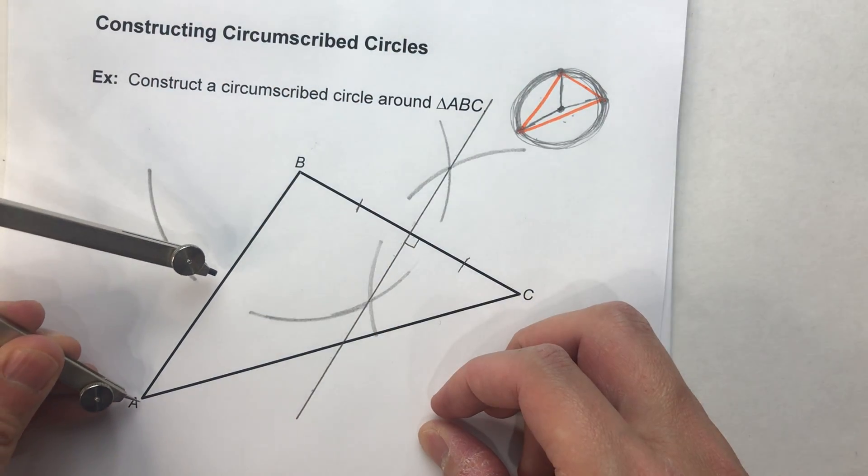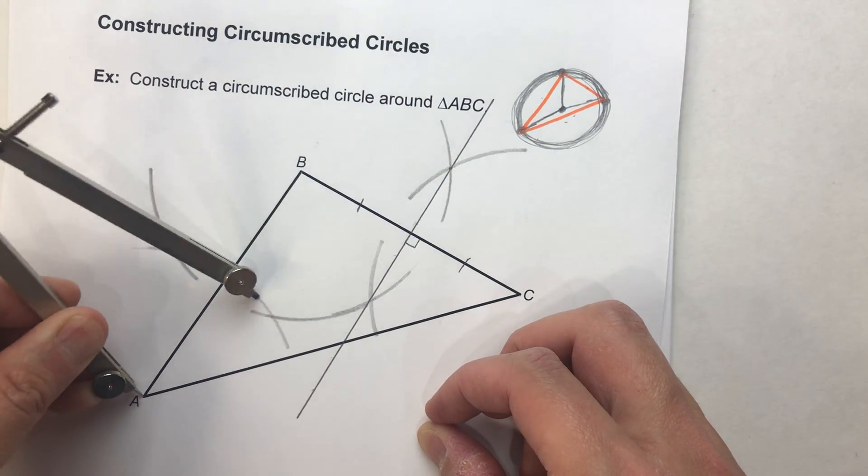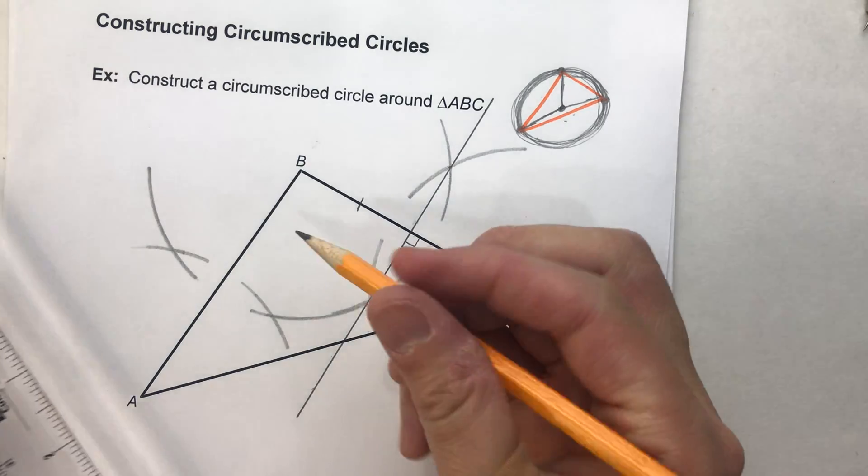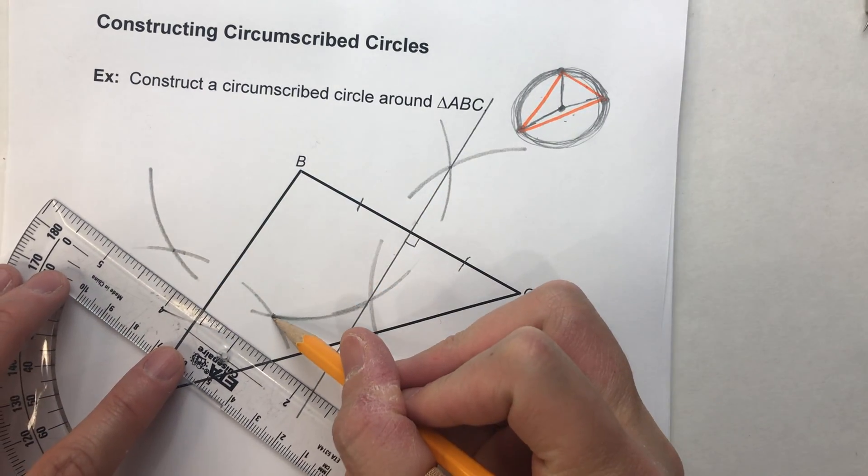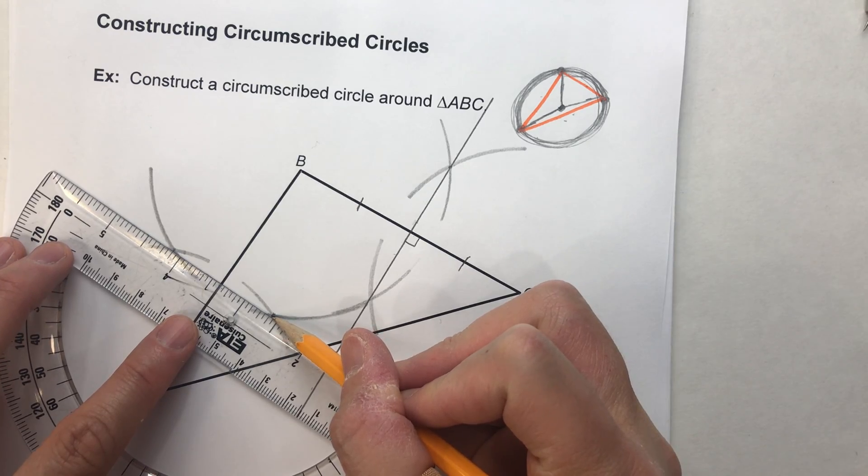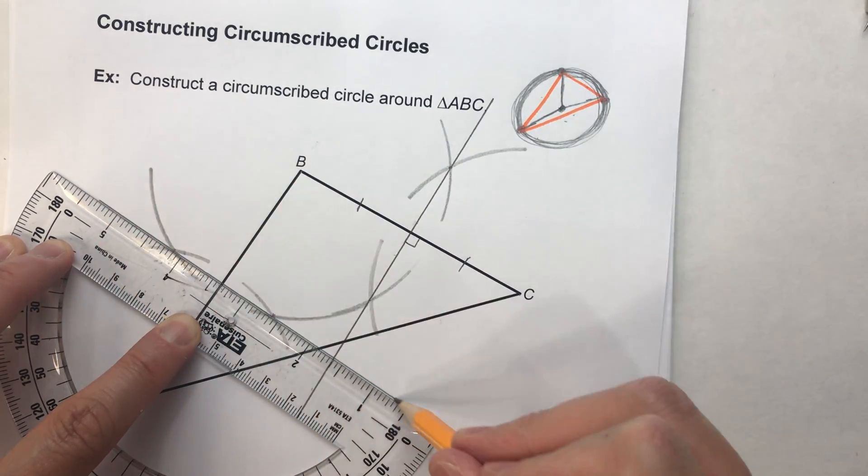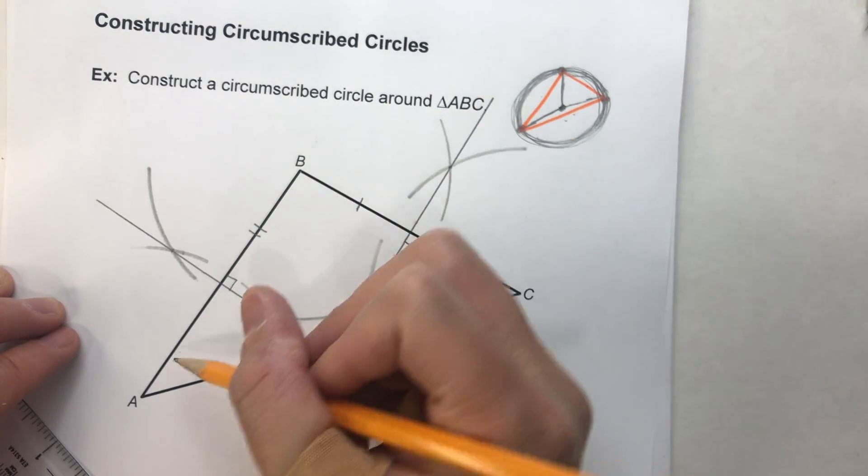Do the same exact setting on the other side of my segment. Arc above, arc below, and now I know where my perpendicular bisector goes. It goes through here and here. So very carefully, I'll line up my straight edge here. There we go. Perpendicular bisector number two.